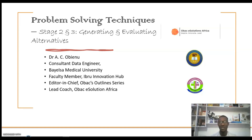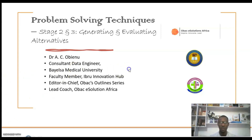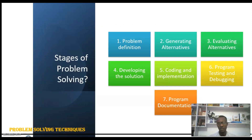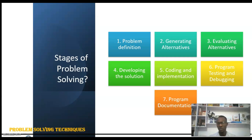Welcome back. In our previous video we covered the first stage of problem solving. In this video we'll be looking at stage two and stage three. Problem solving has seven stages: problem definition, evaluation of alternatives, developing a solution, implementation, program testing and debugging, and documentation. Our focus in this video will be on stage two and stage three.